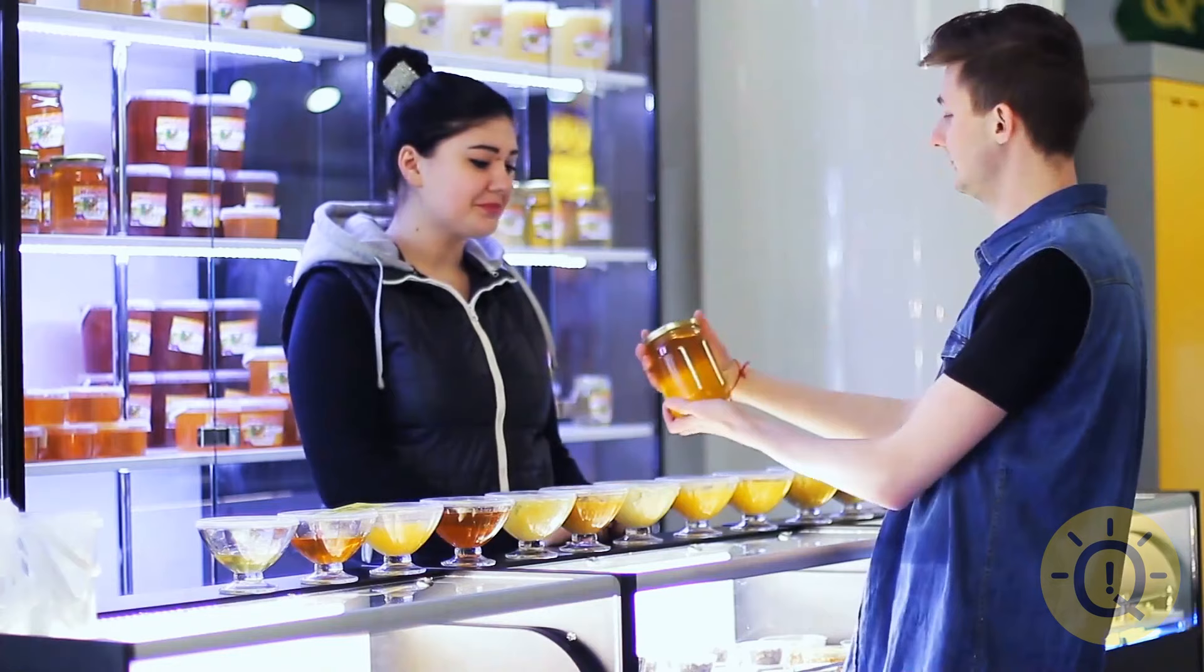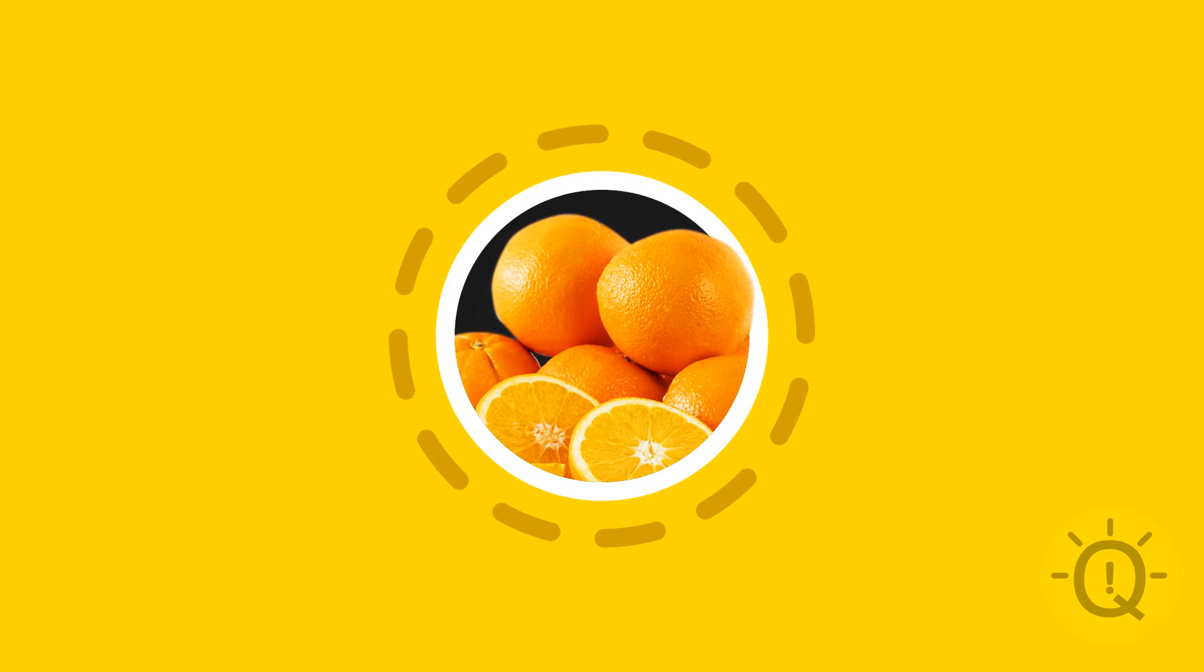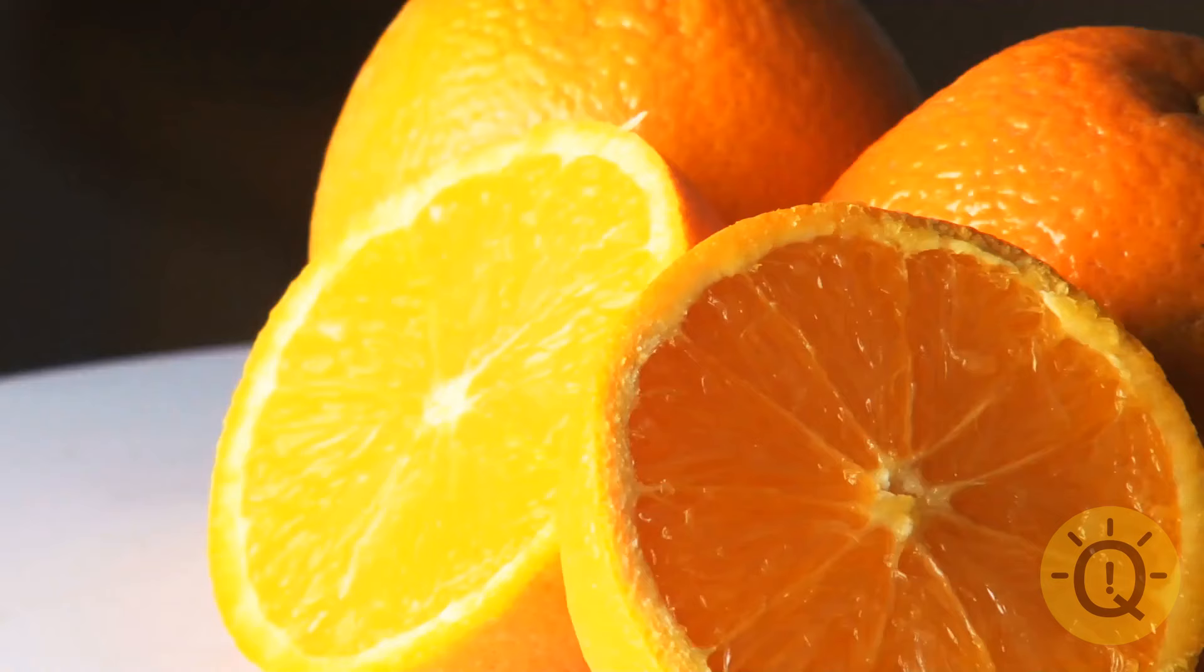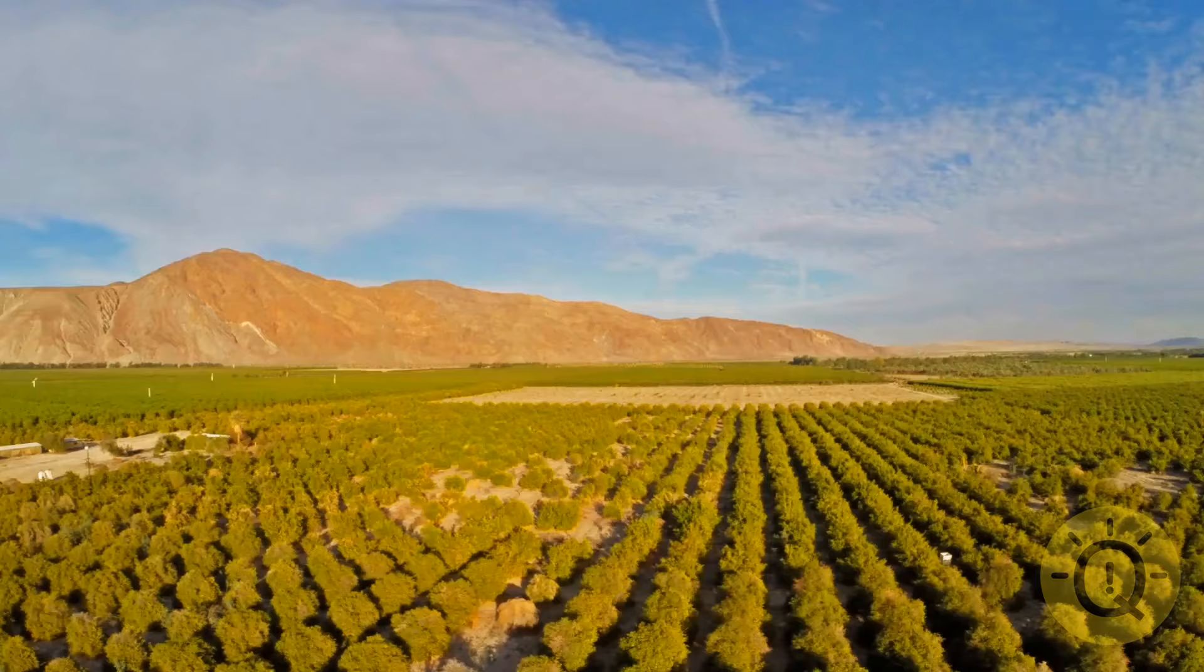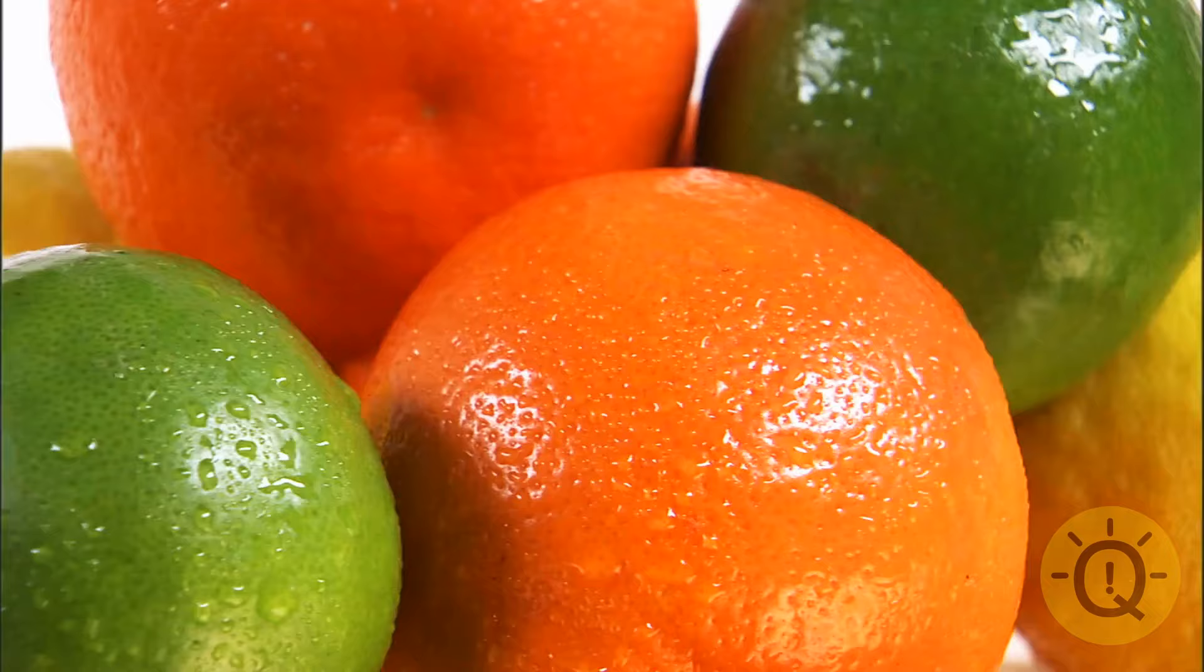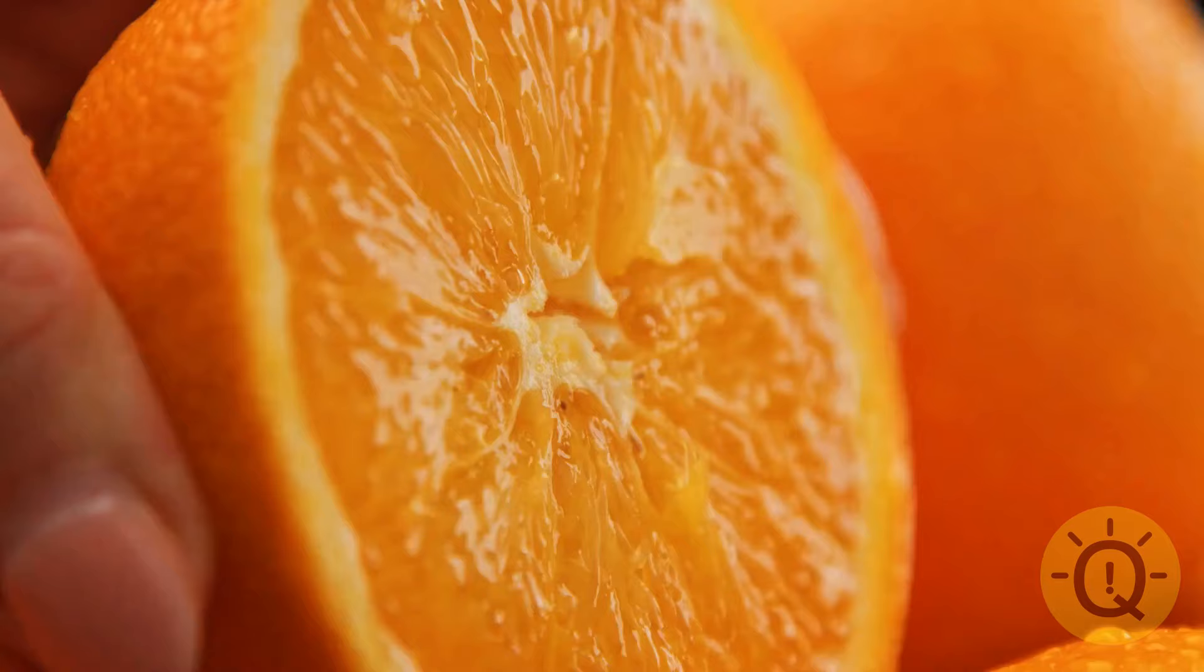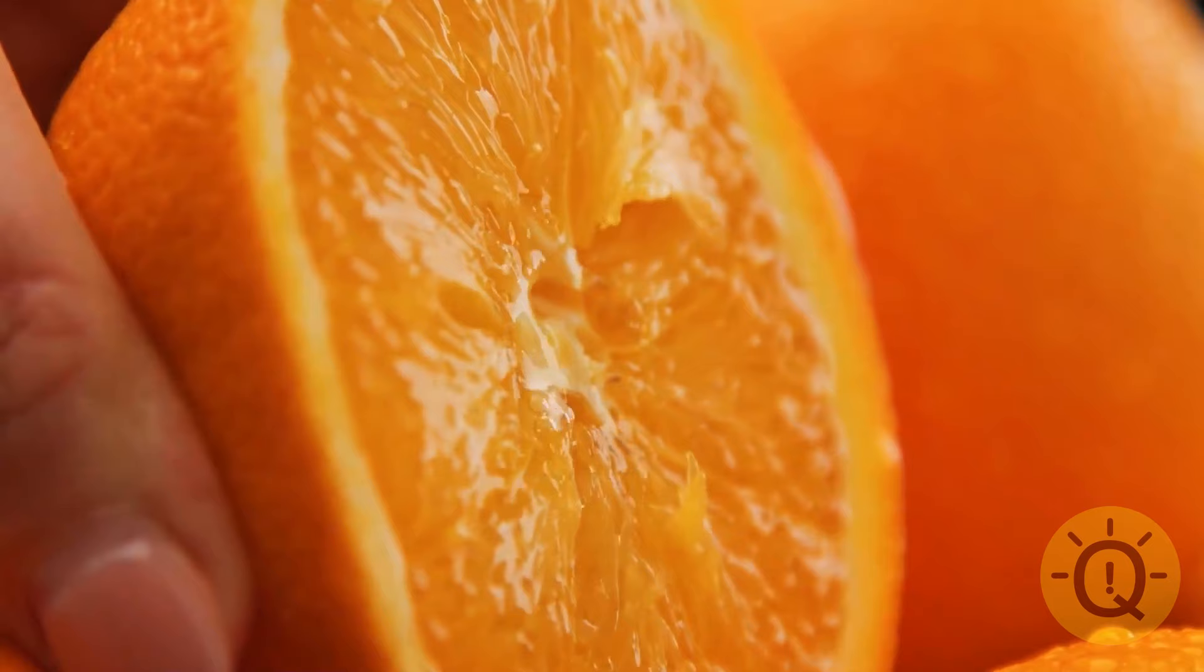Oranges are always orange. Myth. Sweet oranges are a hybrid of tangerines and the pomelo, with a bright green skin to help protect them from the sun. In warmer climates, like Southeast Asia, oranges are still a bright green when ripe. Makes you wonder what came first, the fruit or the color.